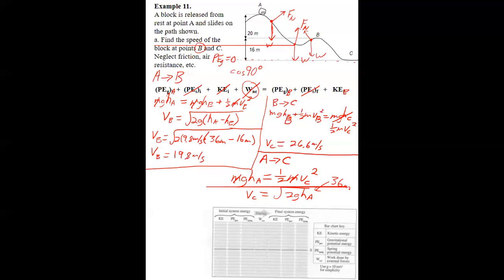So it's just equal to the square root of two GH_A, where H_A is equal to 36 meters.